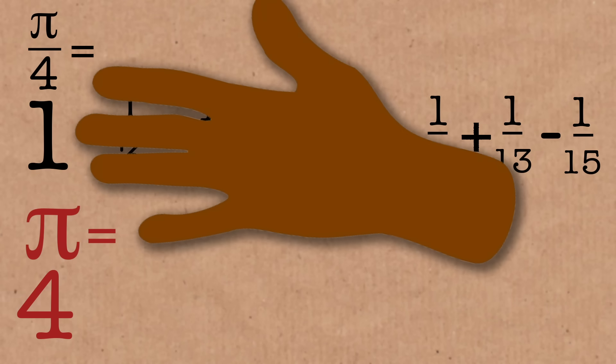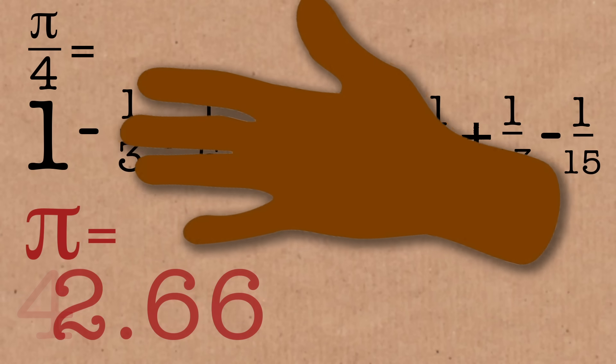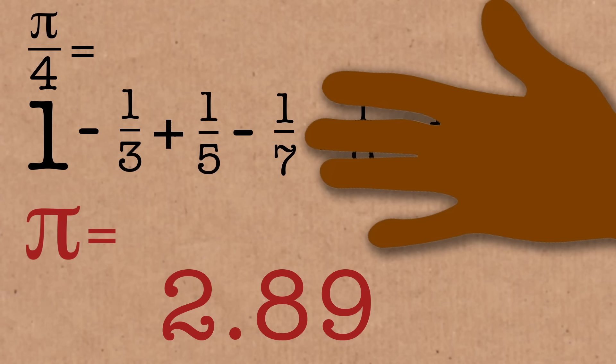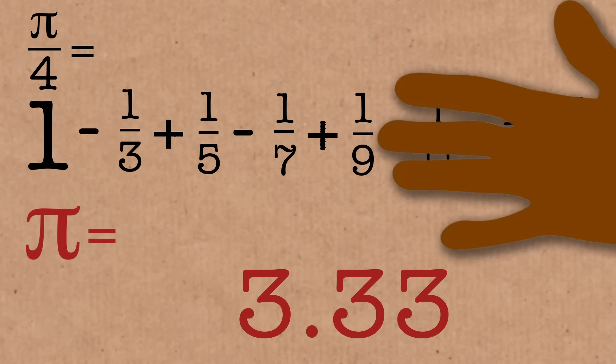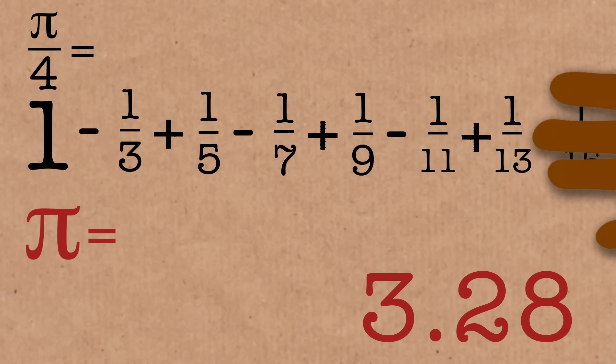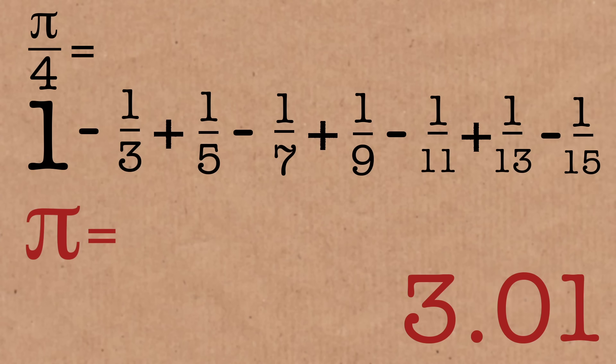This is due to Madhava, and you can see that if I truncate this at any point, I'll get an approximation to Pi. If I truncate it a bit later, I'll get a better approximation. This is sometimes attributed to Leibniz, actually, but that came later. Madhava was the first to come up with this.